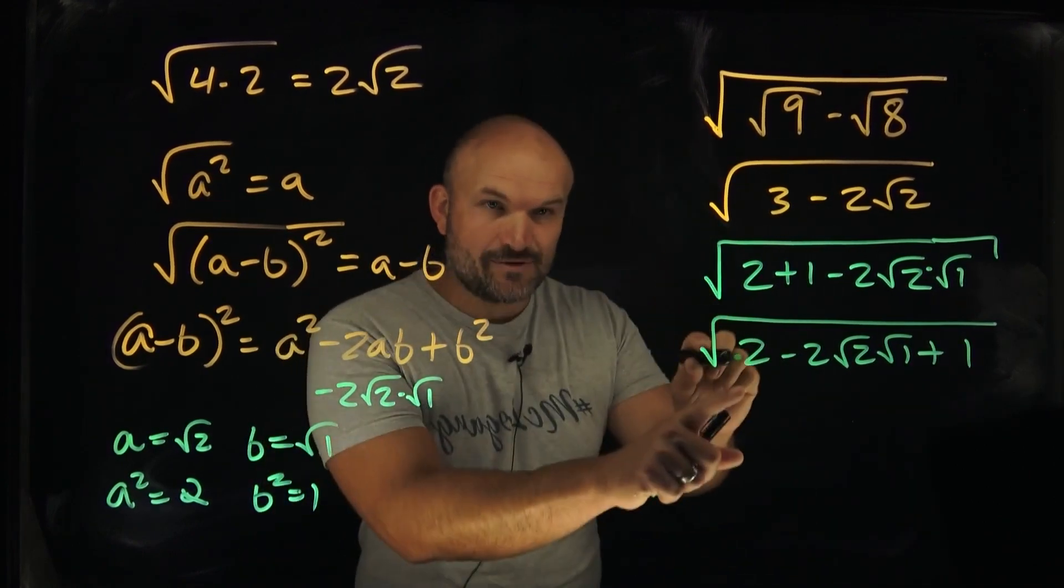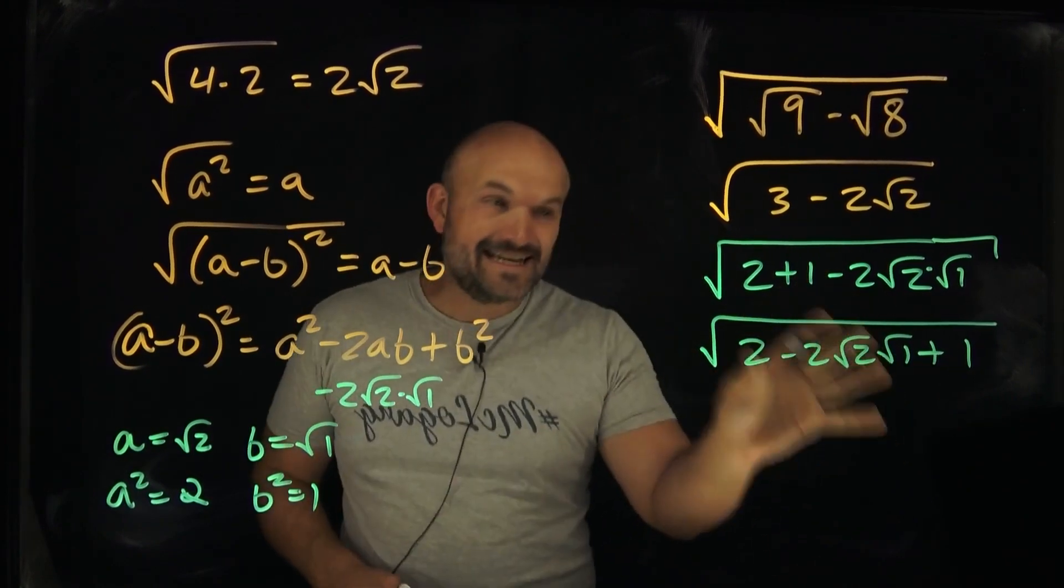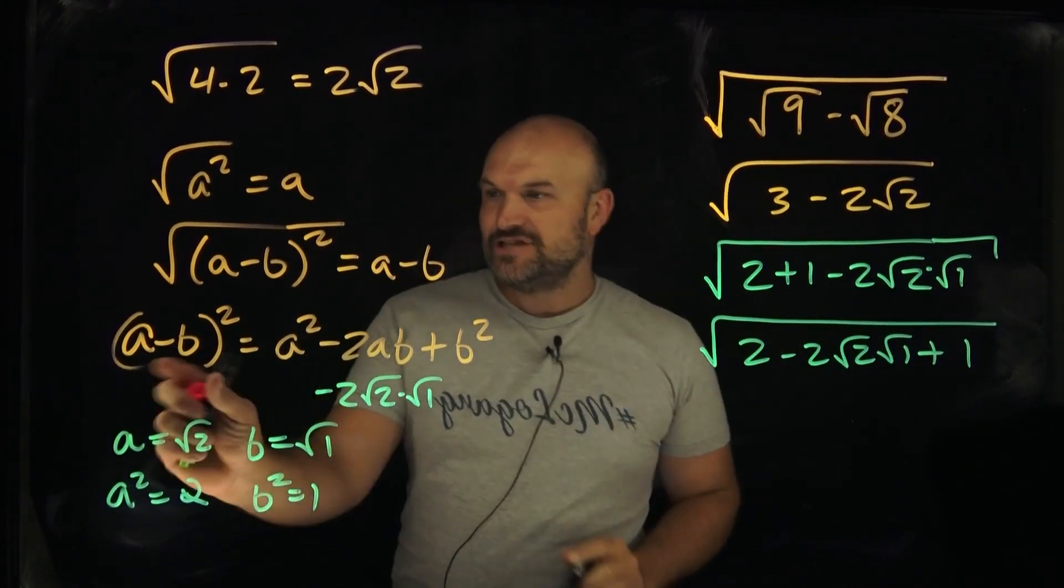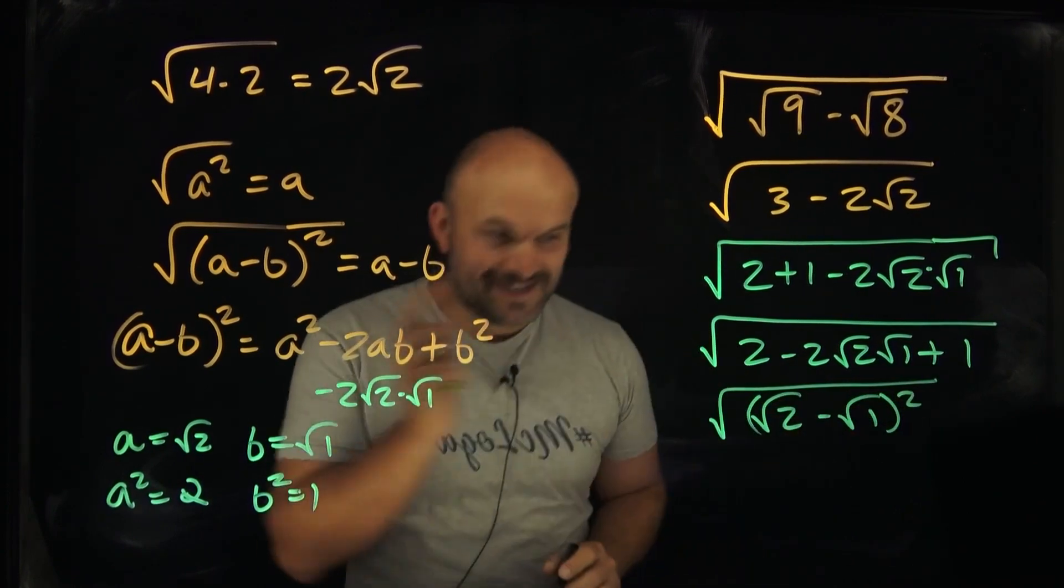Now, what I want you to recognize, this is a squared minus 2ab plus b squared. That means I can now factor this down into an a minus b.